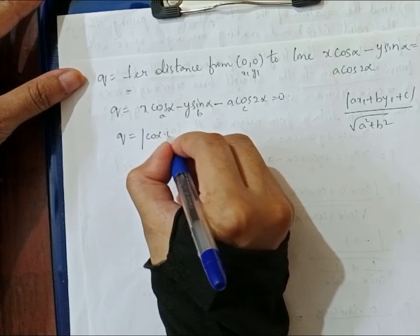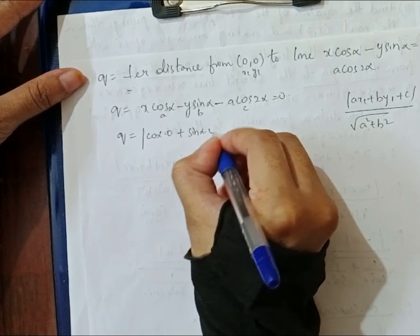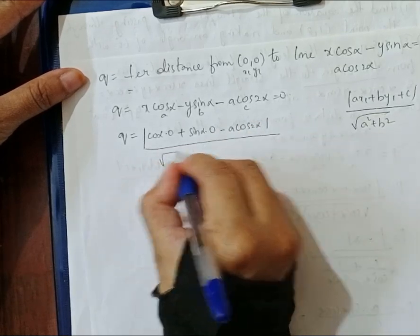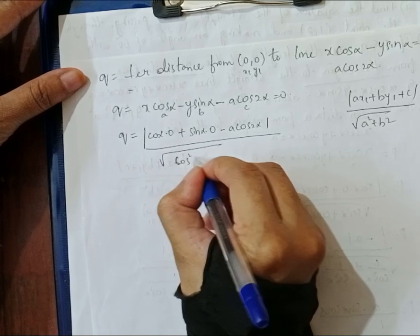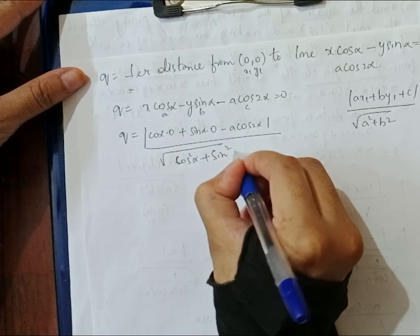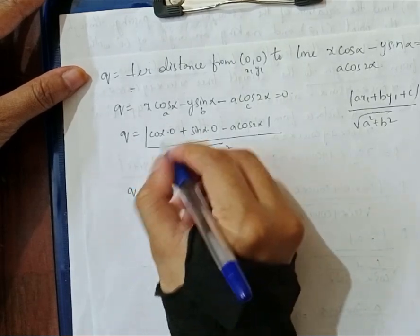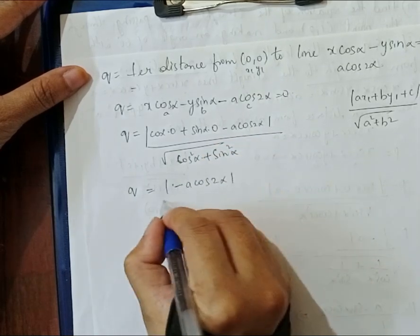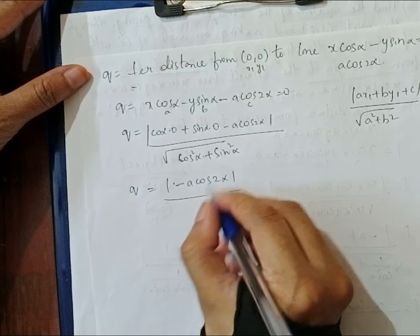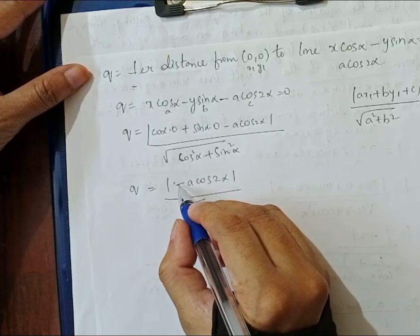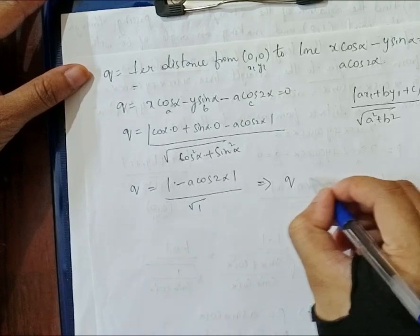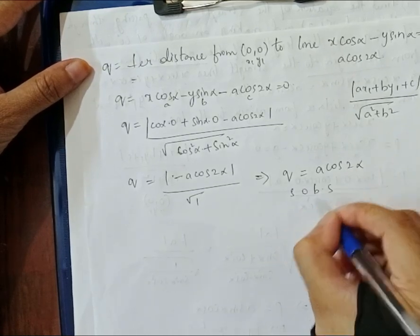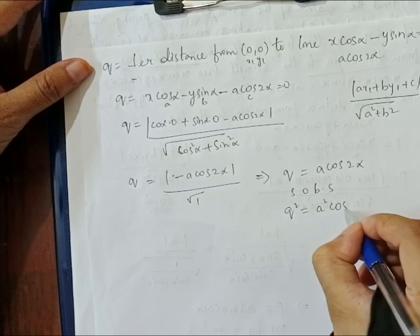Substituting x₁ = 0 and y₁ = 0, the numerator reduces to |−a·cos(2α)|. The denominator is √(cos²(α) + sin²(α)) = √1 = 1. Removing the modulus gives q = a·cos(2α). Squaring both sides: q² = a²·cos²(2α).